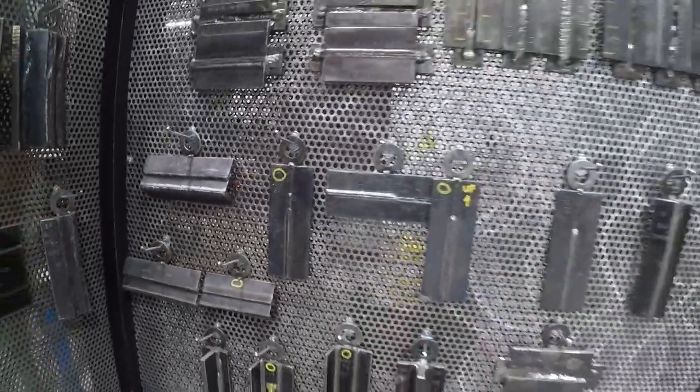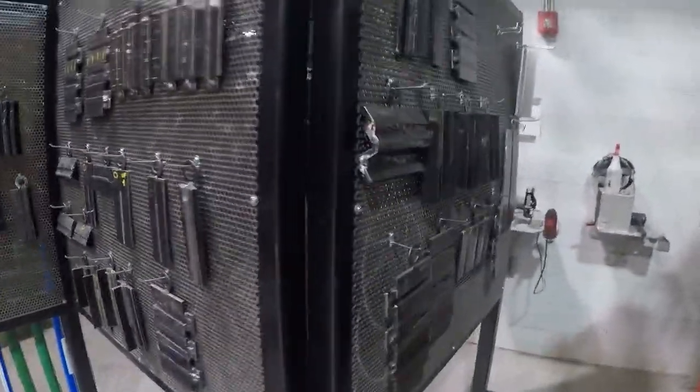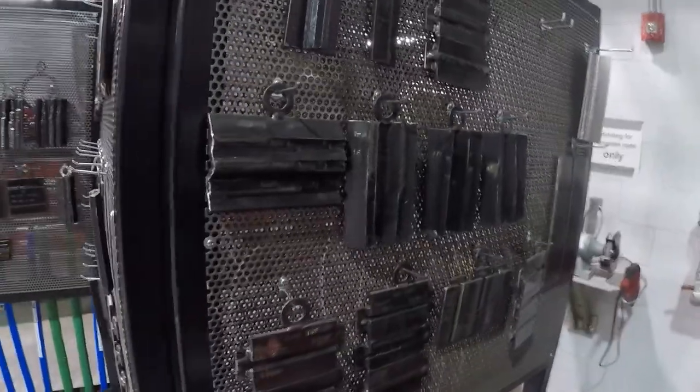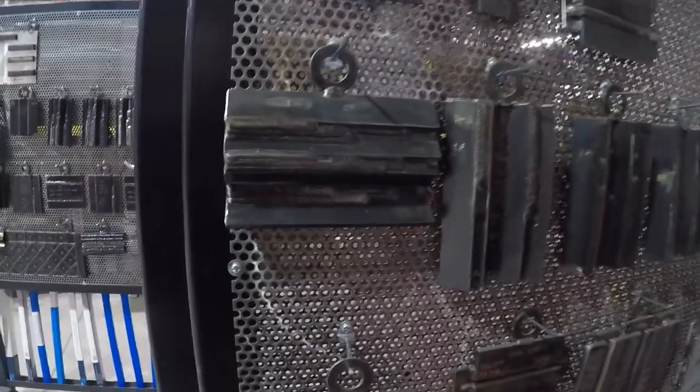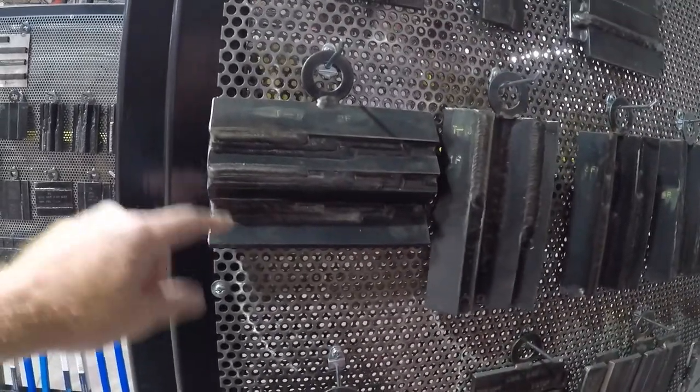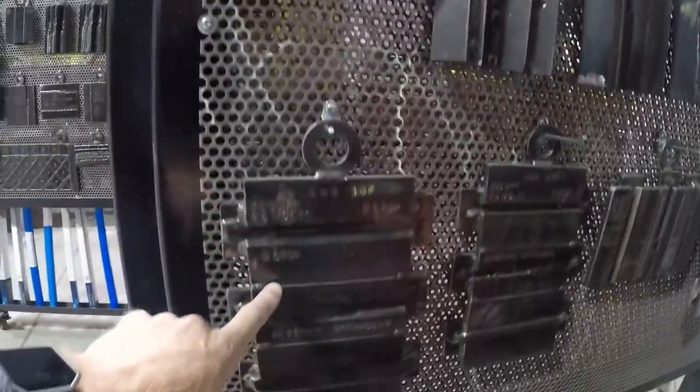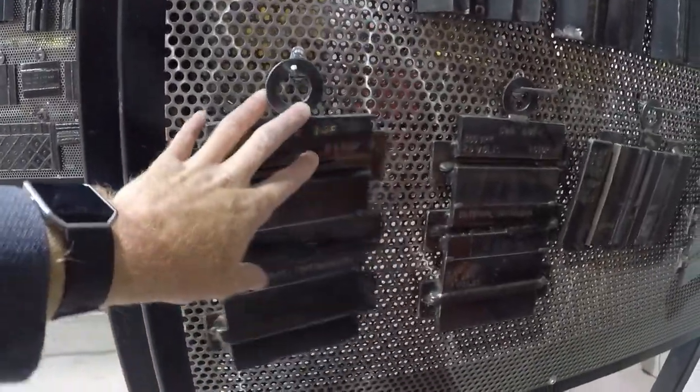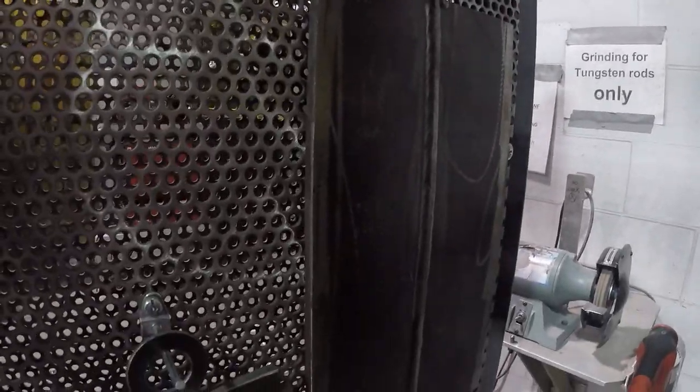Over here we have some flux core and some stick welding. We'll be looking at some T joints, lap joints, outside corners. This is a CWB weld over here to get your certification, and some aluminum welding over here and some sub arc right here.